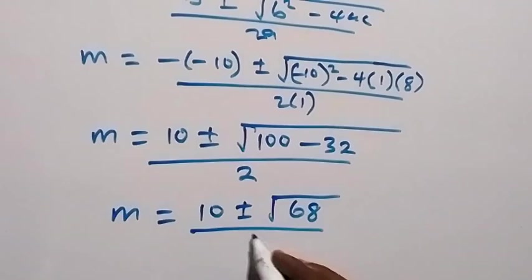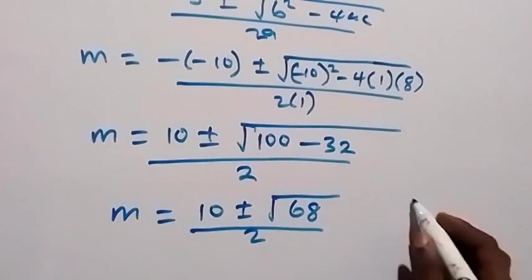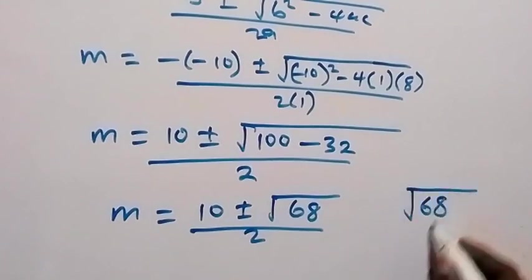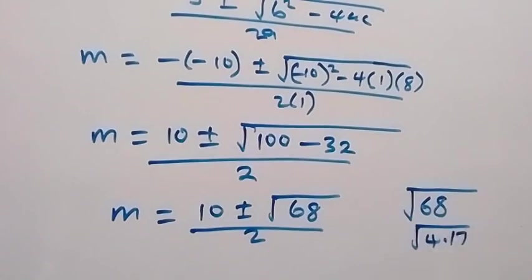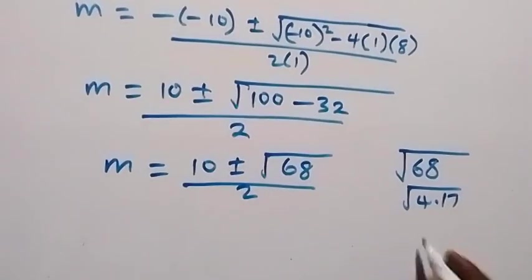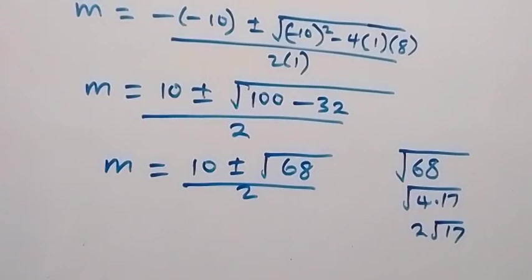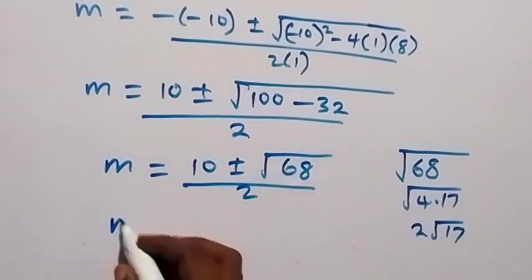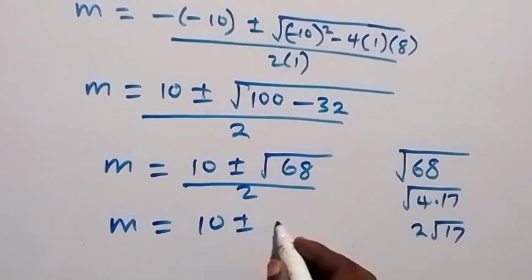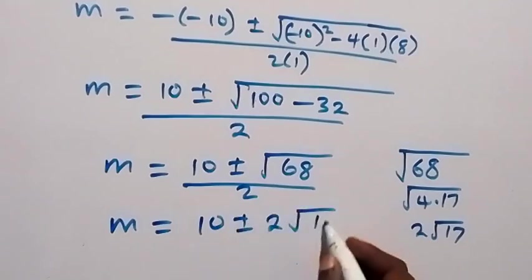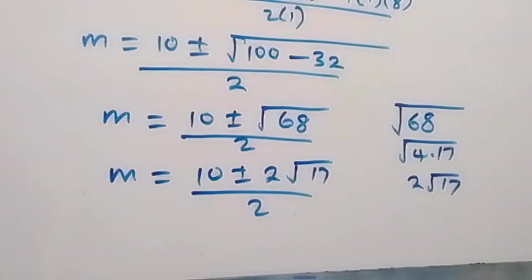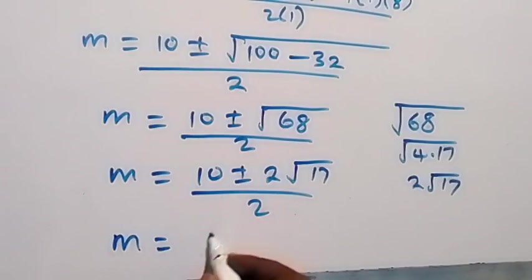We can simplify square root of 68 by writing it as square root of 4 times 17. Since square root of 4 is 2, we take 2 out and get 2 root 17. So M equals 10 plus or minus 2 root 17, over 2. Dividing through by 2, M equals 5 plus or minus root 17.